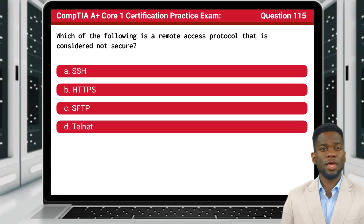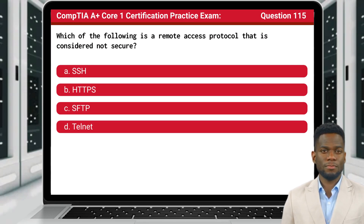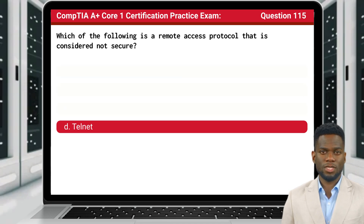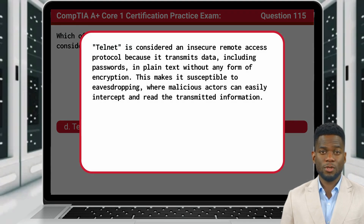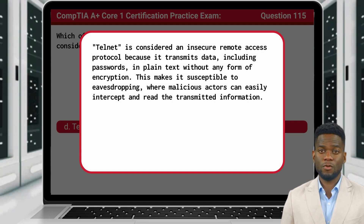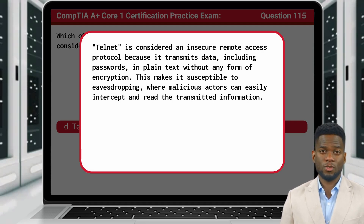Question 115. Which of the following is a remote access protocol that is considered not secure? The answer is D: Telnet. Telnet is considered an insecure remote access protocol because it transmits data, including passwords, in plain text without any form of encryption. This makes it susceptible to eavesdropping, where malicious actors can easily intercept and read the transmitted information.